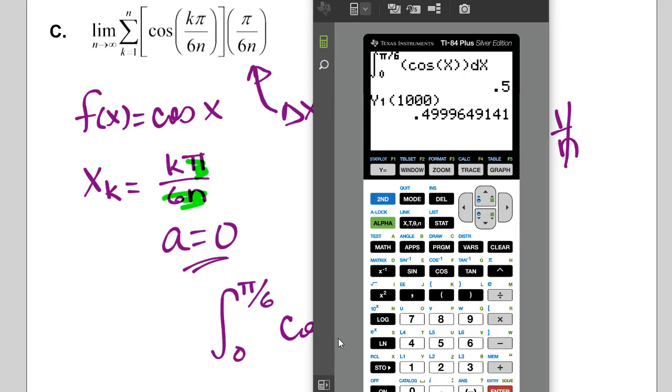We could continue to try some values. But I think that's convincing that the limit of the Riemann sum is equal to 0.5.